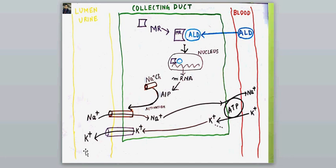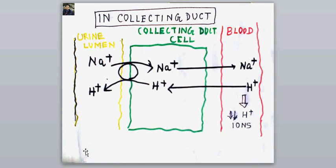At the collecting duct there is also an antiport system for sodium and hydrogen, where sodium enters the cell in exchange for hydrogen ions being expelled. When there is an extra load of sodium at the collecting duct level, there is an increased expulsion of hydrogen ions into the lumen. This decreases the body's hydrogen ion level, causing alkalosis — that is how furosemide produces alkalosis.